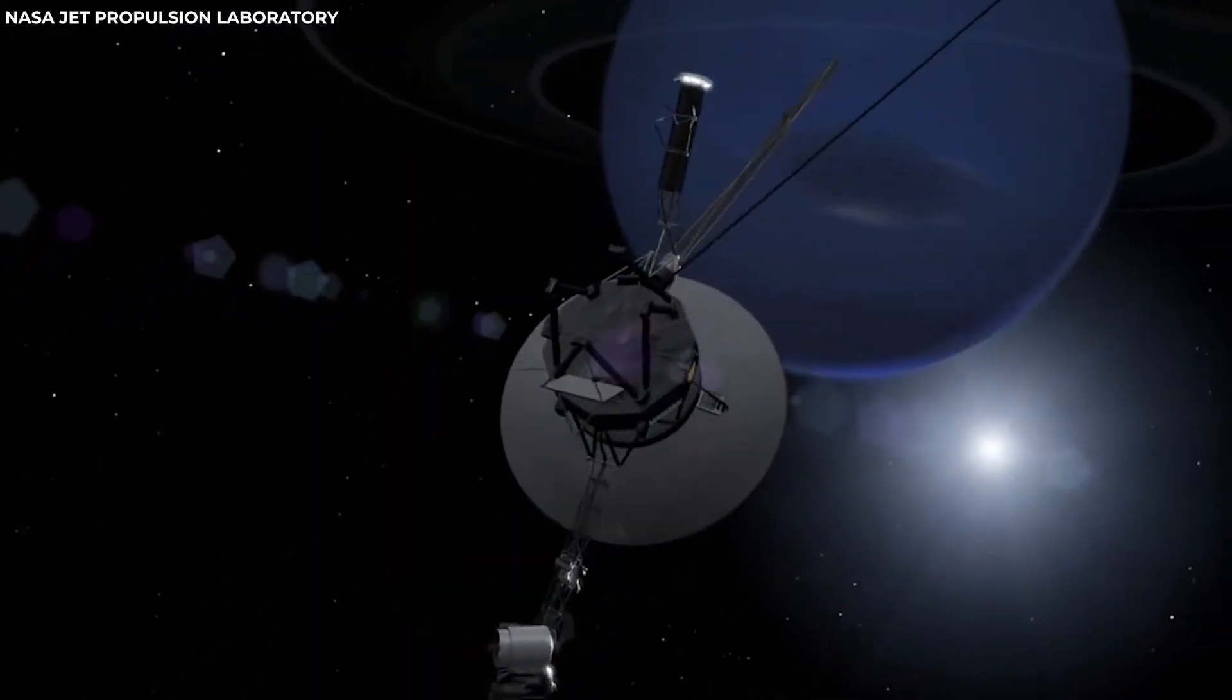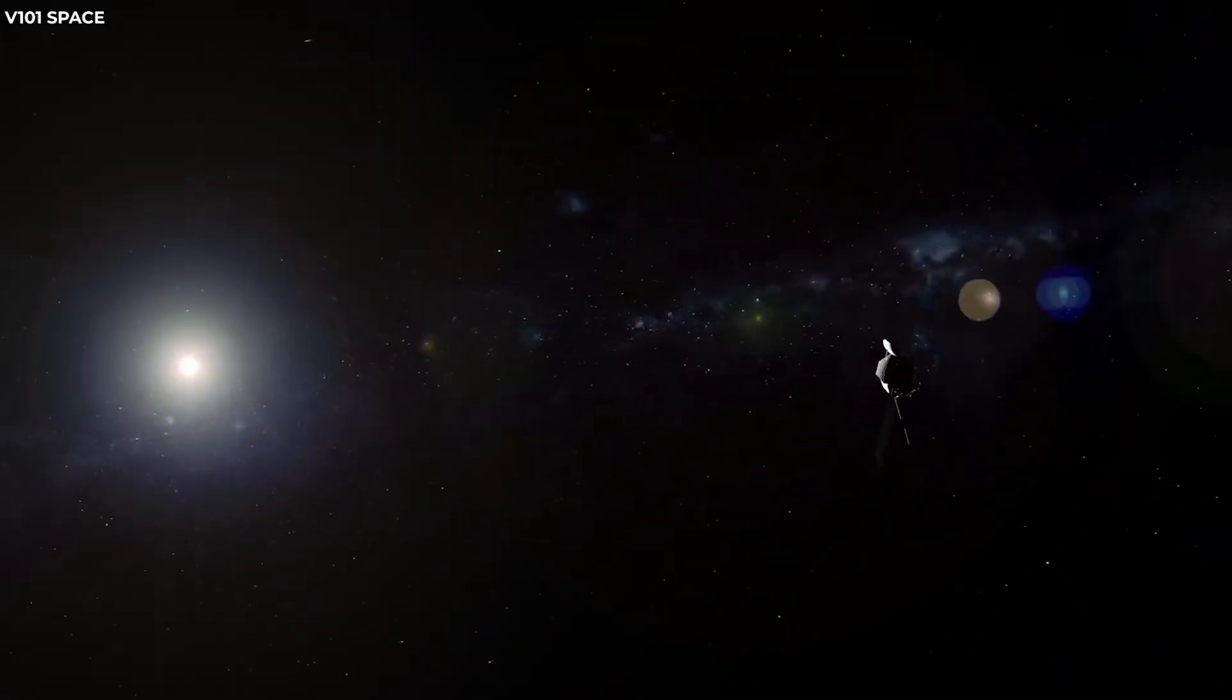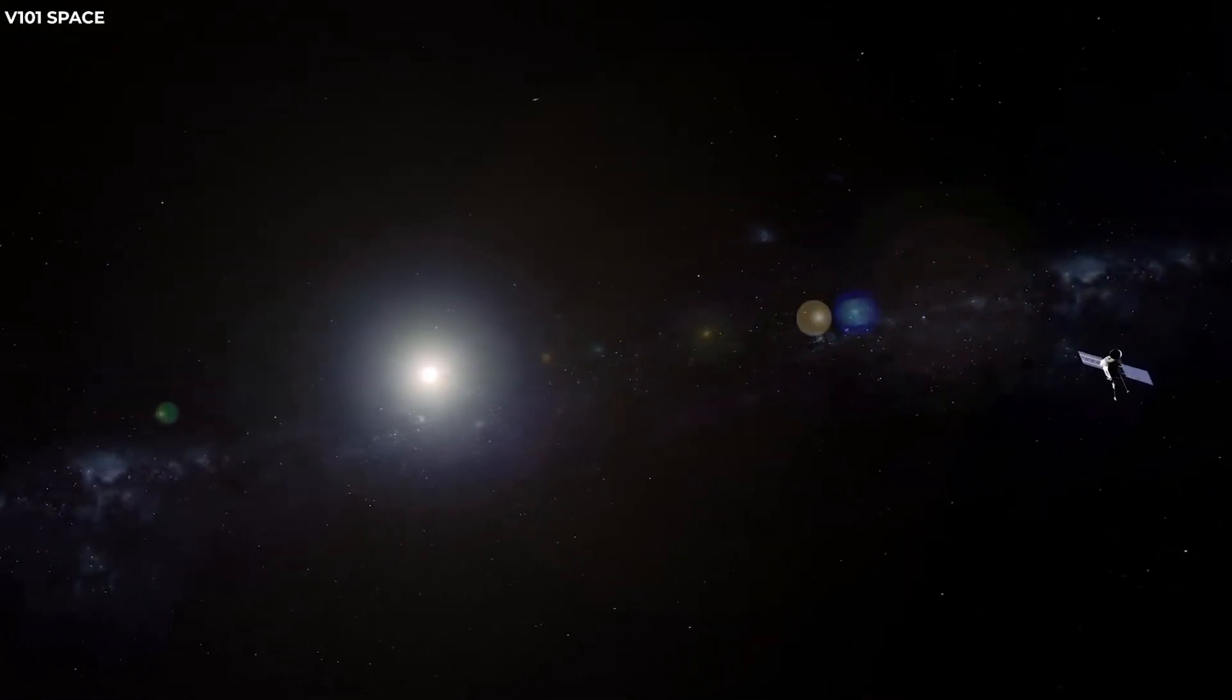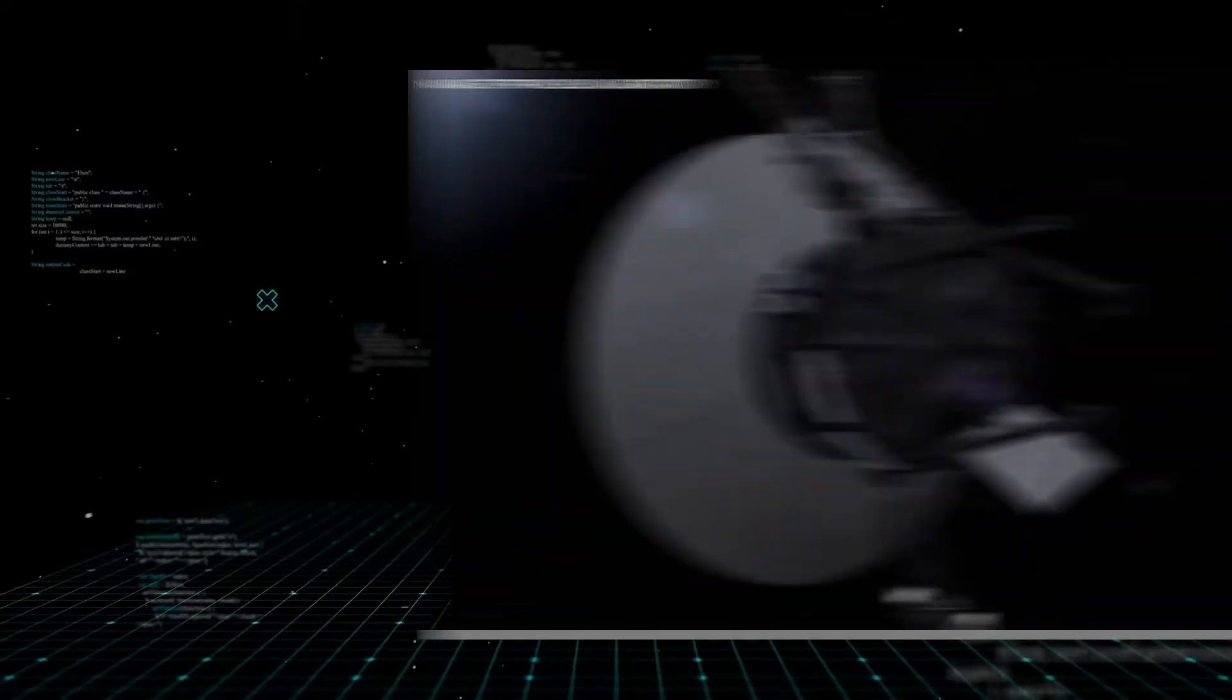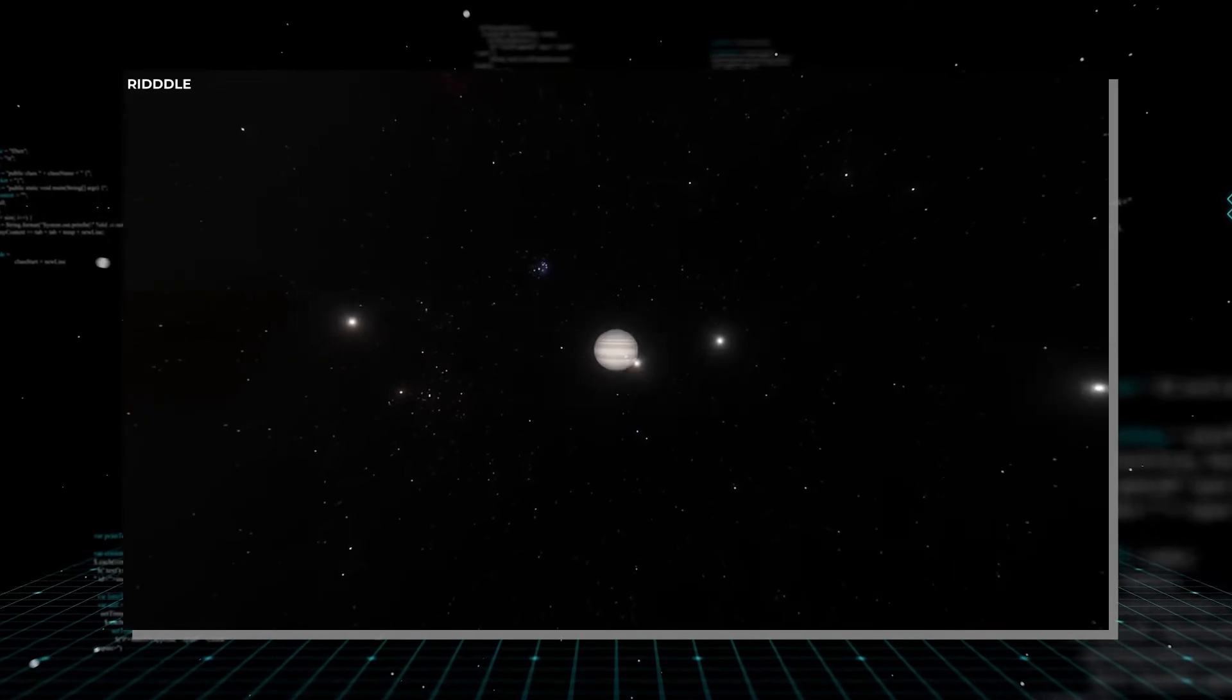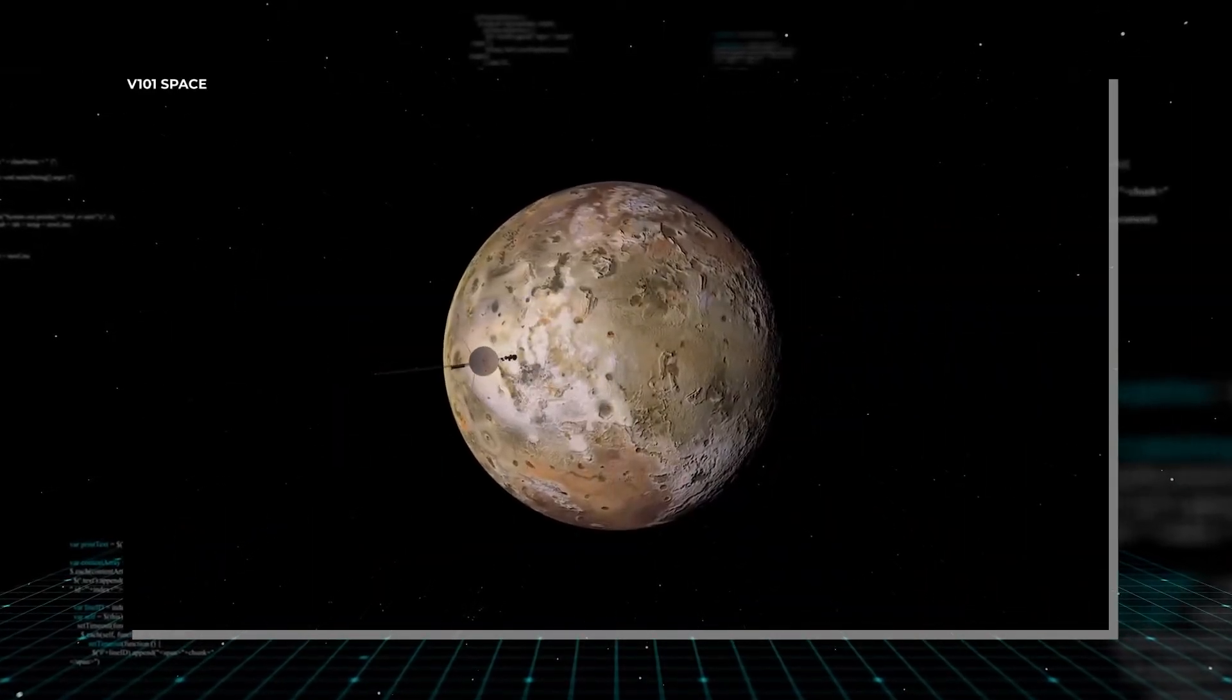However, despite the potential benefits, there were also significant challenges. Plotting a trajectory that would take advantage of gravitational assists from multiple planets required precise calculations and timing. The spacecraft would need to arrive at each planet at exactly the right time and position to receive the necessary boost to continue on to the next destination.